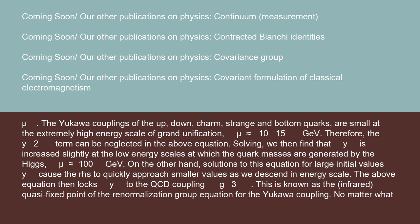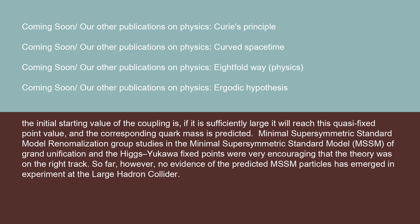No matter what the initial starting value of the coupling is, if it is sufficiently large, it will reach this quasi-fixed point value, and the corresponding quark mass is predicted. Minimal supersymmetric standard model: renormalization group studies in the minimal supersymmetric standard model (MSSM) of grand unification and the Higgs-Yukawa fixed points were very encouraging that the theory was on the right track. So far, however, no evidence of the predicted MSSM particles has emerged in experiment at the Large Hadron Collider.